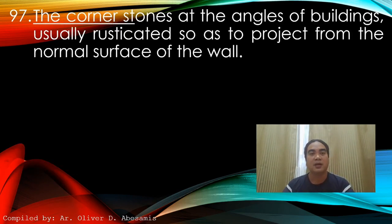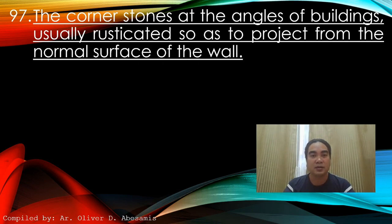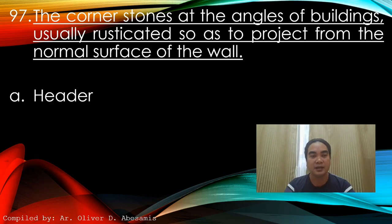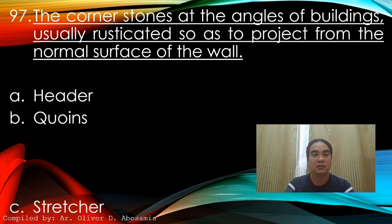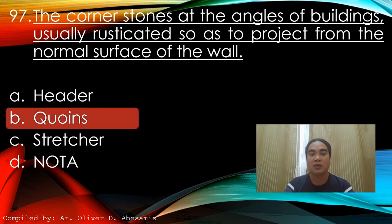Question 97: The cornerstone at the angles of a building, usually rusticated so as to project from the normal surface of the wall. A) Header, B) Quoins, C) Stretcher, D) None of the above. Answer: B) Quoins.